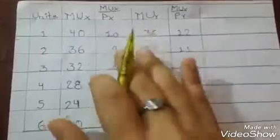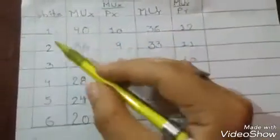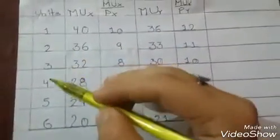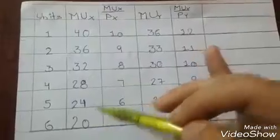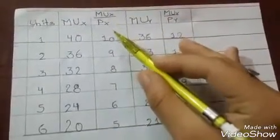Now let us see the table: unit 1, unit 2, unit 3, unit 4, 5, and 6. Here are the MU X values: 40, 36, 32, 28, 24, and MU X upon price PX is 10, 9, 8, 7, 6, and 5.